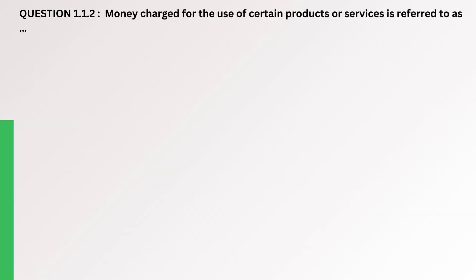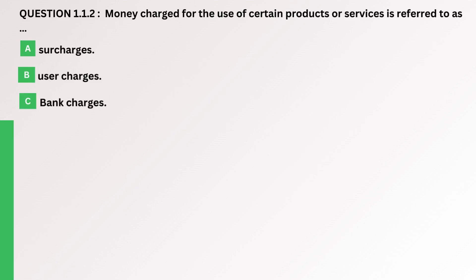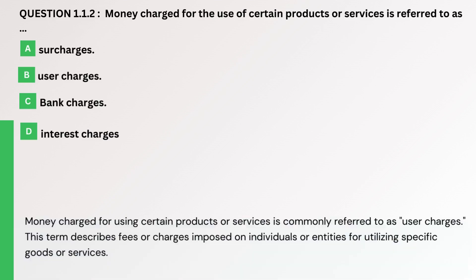Question. Money charged for using certain products or services is referred to as. A. Surcharges. B. User charges. C. Bank charges. D. Interest charges. The correct answer is B. User charges. Money charged for using certain products or services is commonly referred to as user charges. This term describes fees or charges imposed on individuals or entities for utilizing specific goods or services.